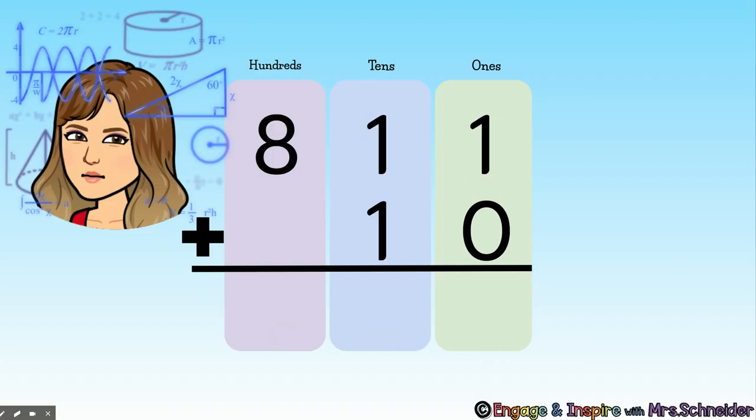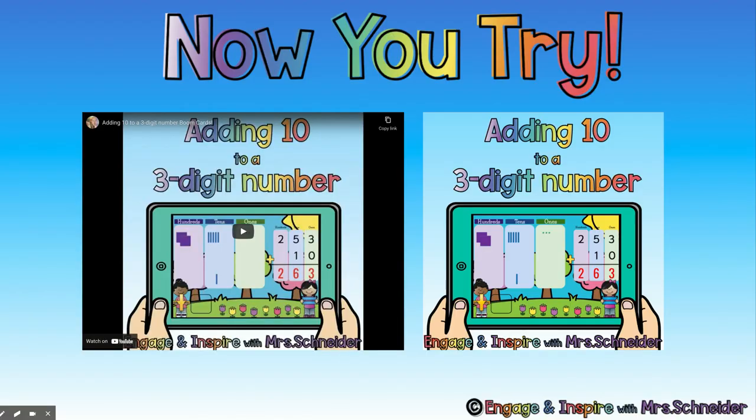750 plus 10, 760. 811 plus 10, 821. All right.